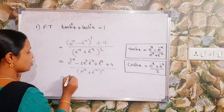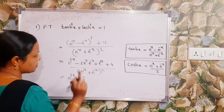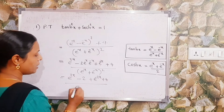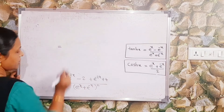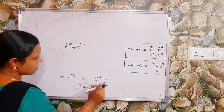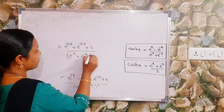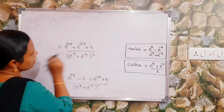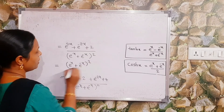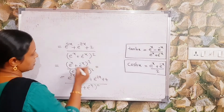That is equal to e^(2x) - 2·e^(x-x) + e^(-2x) + 4 over (e^x + e^(-x))². Since e^x · e^(-x) = e^0 = 1, we write e^(2x) + e^(-2x) - 2 + 4 = e^(2x) + e^(-2x) + 2, all divided by (e^x + e^(-x))². This is of the form (a + b)² = a² + 2ab + b², so we get (e^x + e^(-x))² / (e^x + e^(-x))², which cancels to give 1.